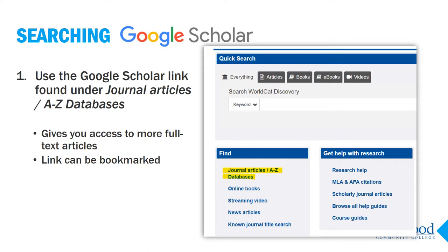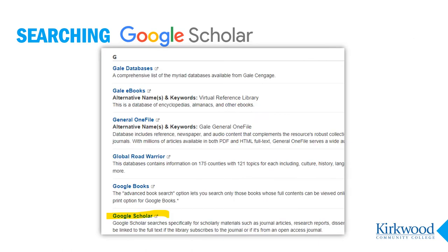From the library home page, click on A to Z databases. Then scroll down or use Ctrl+F to find Google Scholar in the library. You may bookmark this link to use in the future.